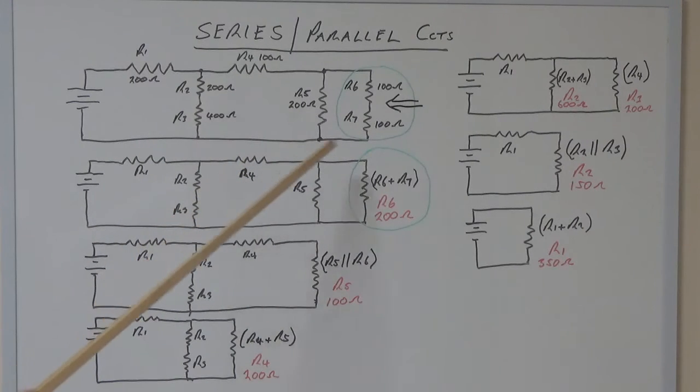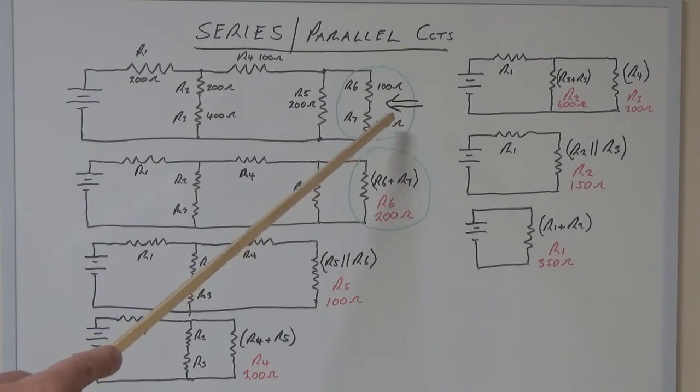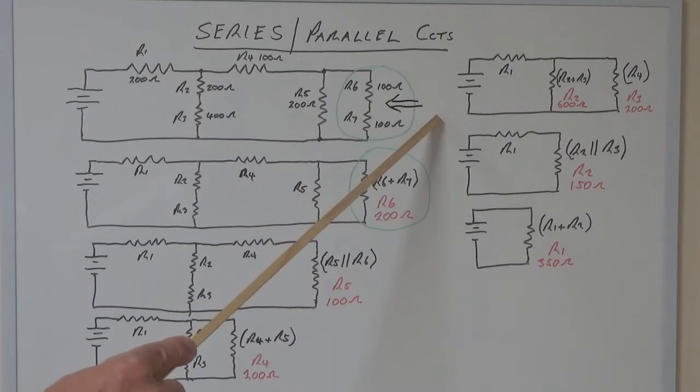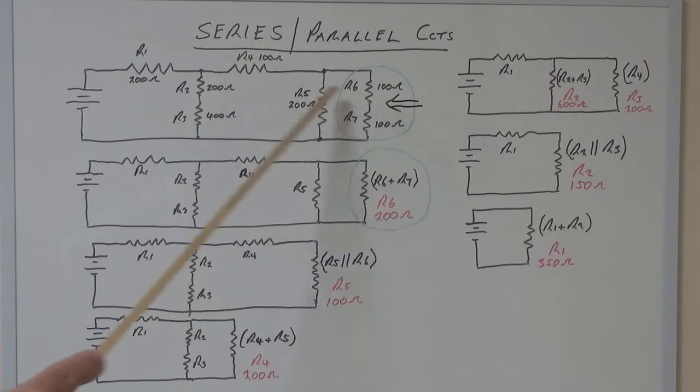Now the important part about breaking this down and bringing it down to its final resistance, like the earlier ones we looked at, is we start from this end and work our way back towards the supply end.